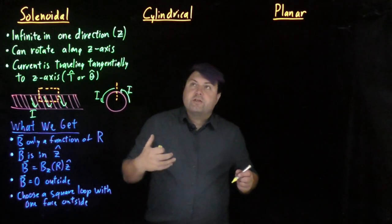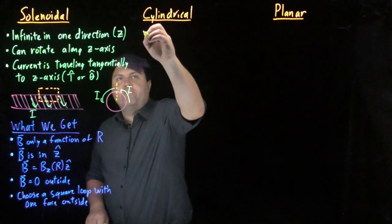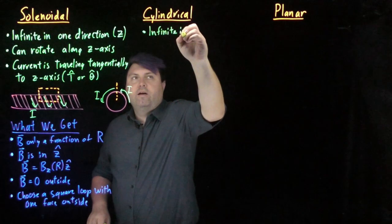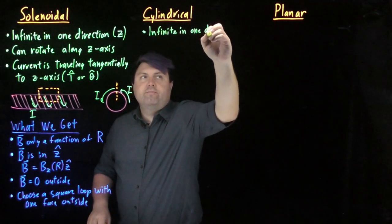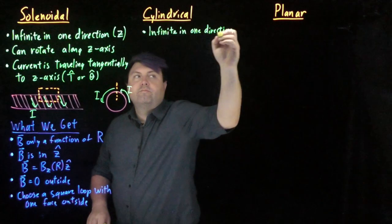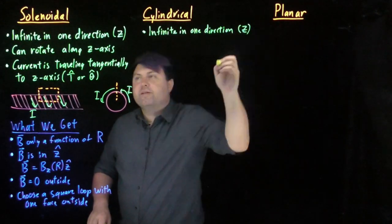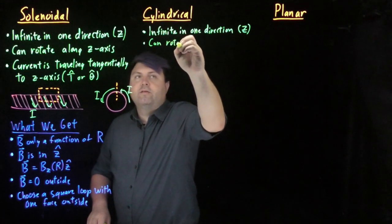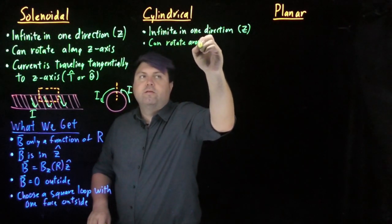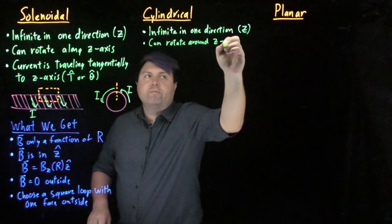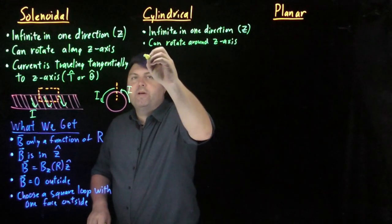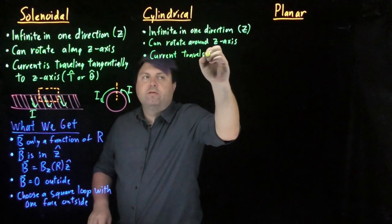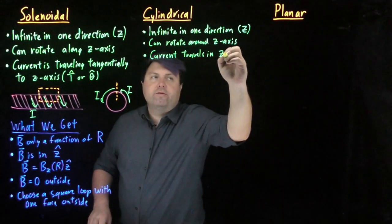For cylindrical, cylindrical hopefully feels pretty nice from electric field. It's infinite in one direction, and that direction we will still say is z. So we can rotate around our z-axis as well. But now we have the current travels in the z-direction.